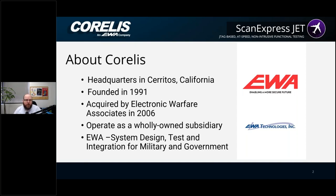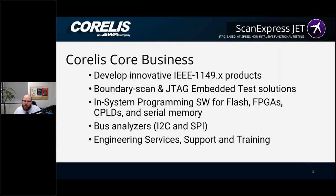A bit about Corellis. We are located in Cerritos, California. We were founded in 1991, so we've been around for just over 30 years. We were acquired by Electronic Warfare Associates in 2006. We are essentially independent. We work with EWA on some projects, but otherwise we work on commercial projects, whereas they tend to take on more contracts. This means we have a core business that is not just military aerospace — we also work with all sorts of commercial companies.